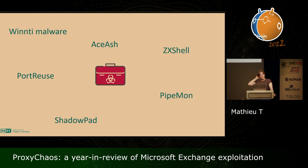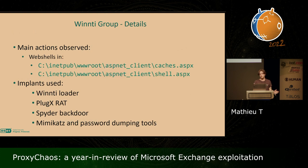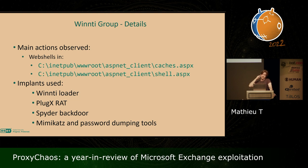Winanti makes use of the Winanti malware, Zedic shell, and they have custom implants such as the port reuse passive backdoor and pipeline, which we documented on WeLiveSecurity. They frequently use a credential dumper called AceHash, and it's the first group that had access to the ShadowPad backdoor. They deployed their web shells as caches.aspx and shell.aspx, and on the compromised mail server we saw the Winanti loader, PlugX extract, the Spider backdoor, Mimikatz, and some other custom password-dumping tools.